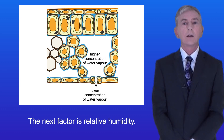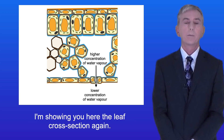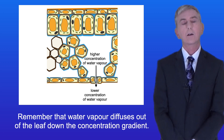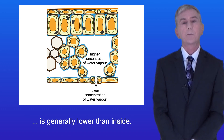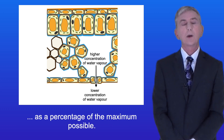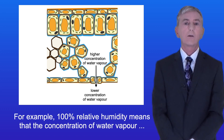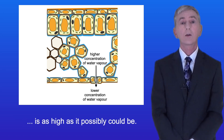The next factor is relative humidity. The relative humidity tells us the concentration of water vapor in the air as a percentage of the maximum possible. For example, 100% relative humidity means that the concentration of water vapor is as high as it possibly could be. Remember that water vapor diffuses out of the leaf down the concentration gradient, because the concentration of water vapor outside the leaf is generally lower than inside.